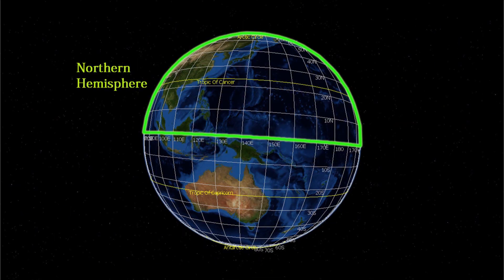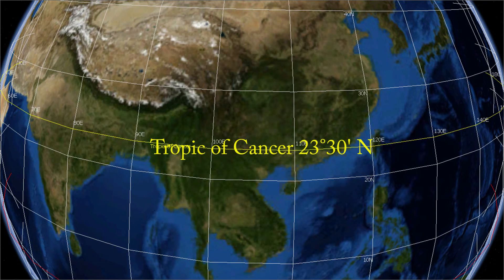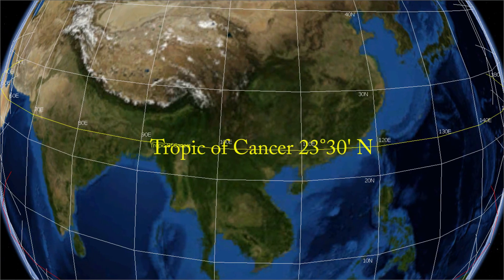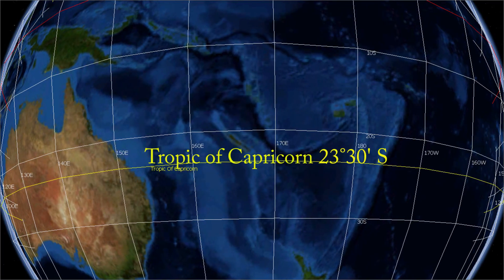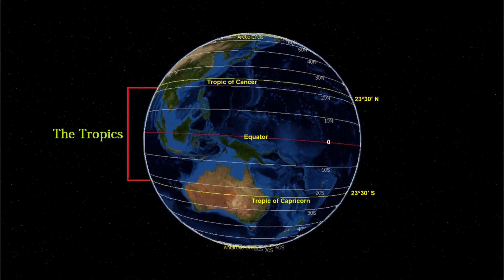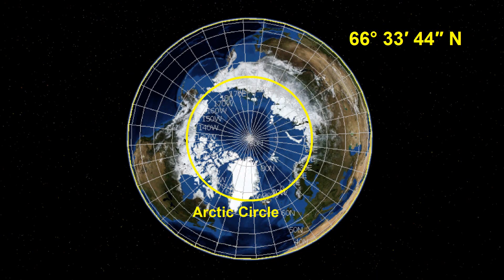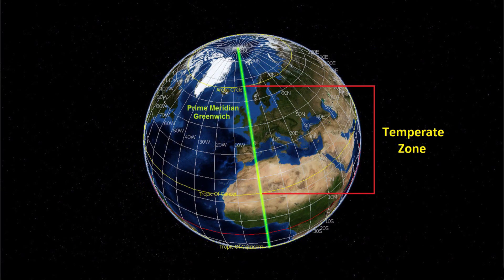North of the equator is the northern hemisphere; south of the equator is the southern hemisphere. At 23 and a half degrees north of the equator we have the Tropic of Cancer, and at 23 and a half degrees south we have the Tropic of Capricorn. Between these lines are the tropics. At 66 degrees 33 minutes north and south are the Arctic and Antarctic circles. Between here and the tropics is the temperate zone.